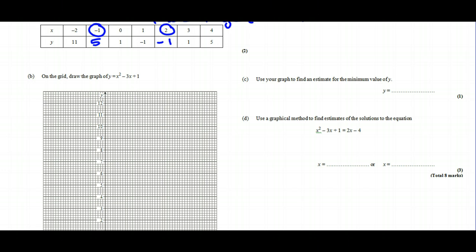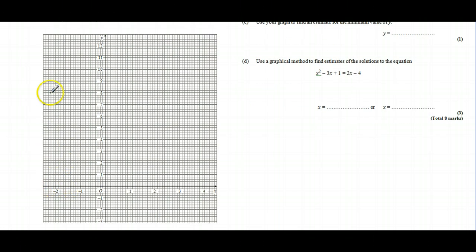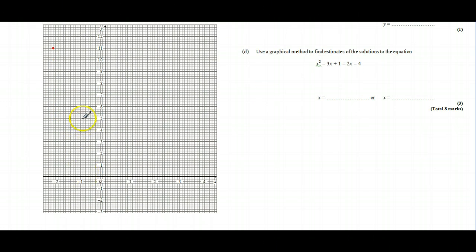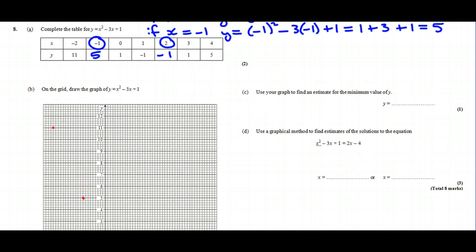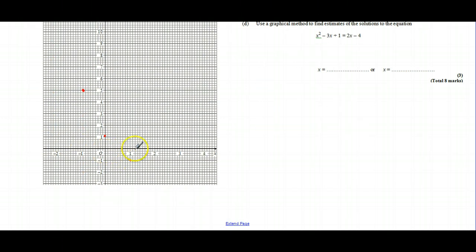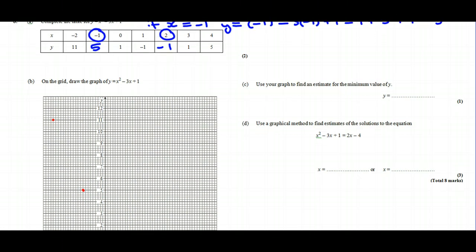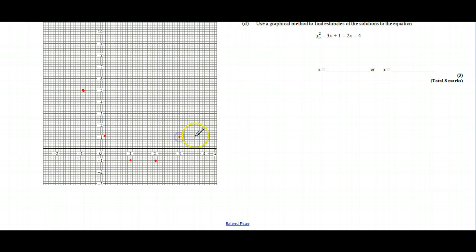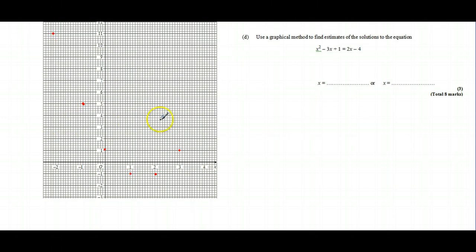When x is -2, y is 11. When x is -1, y is 5. When x is 0, y is 1. When x is 1, y is -1. When x is 2, y is also -1. When x is 3, y goes back up to 1, and when x is 4, y is 5.